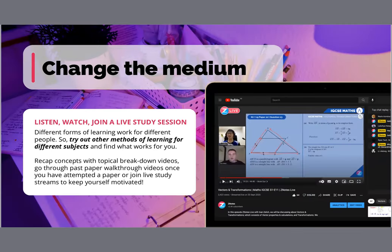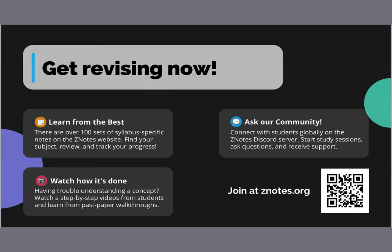Another way to actively revise and recall is to change the medium and methods you're already using. For example, if you are a visual learner, try to listen to your notes — you can do this by recording yourself reading those notes out loud and then playing them back. That can also be an effective way to learn. So that's it for the meeting, and I hope all the resources mentioned in this workshop were helpful.